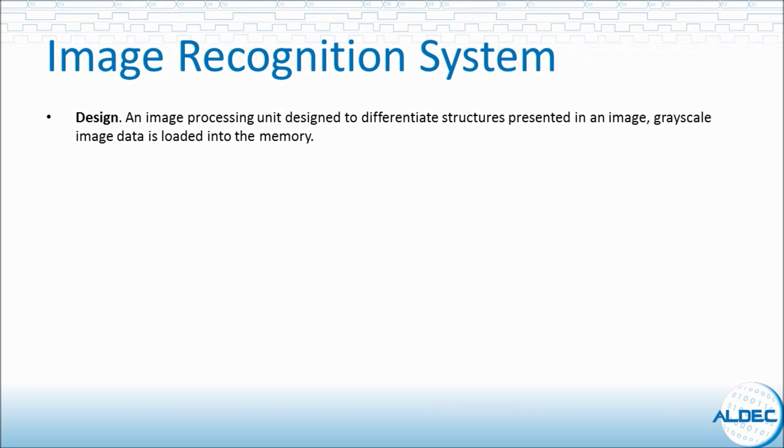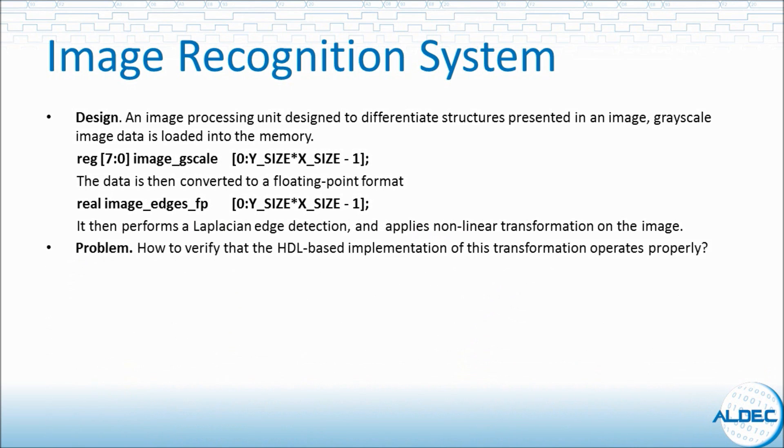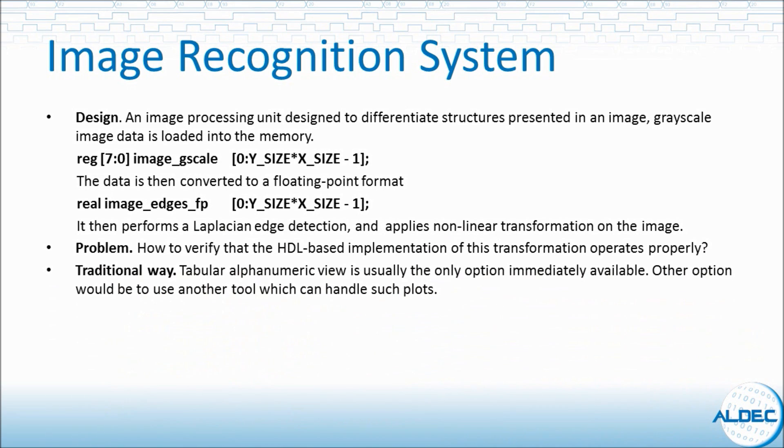Another example is based on image recognition systems where the image processing unit is used to differentiate structures present in an image. For example, a CT scan image. Here, the gray scale data is stored in a one dimensional array which is then converted to a floating point format which offers high dynamic range. The digital system then performs a Laplacian edge detection on the image stored in the memory. After the edge detection, a non-linear transformation is applied. Now, the challenge here is how would you see the image in order to verify if the transformation is operating correctly. Again, the traditional method would be to analyze the tabular representation of data or use another tool that supports such feature.